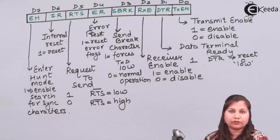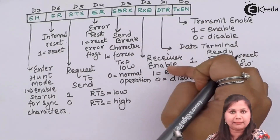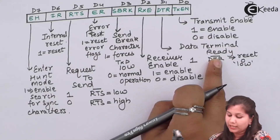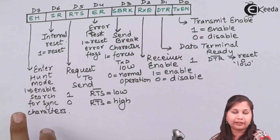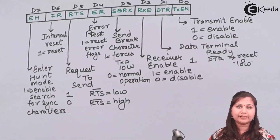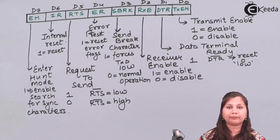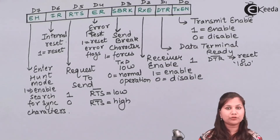So these are the 8 bits of the command instruction control word, used for setting the operations of the 8251: enabling and disabling the transmitter and receiver, activating the Request To Send and Data Terminal Ready pins, resetting the error flags, internal resetting, entering or enabling the hunt mode, and sending break characters. This is the format of the command instruction of the 8251 Programmable Communication Interface, also known as the Universal Synchronous Asynchronous Receiver Transmitter or USART. I hope this topic is now clear to you. Thank you.